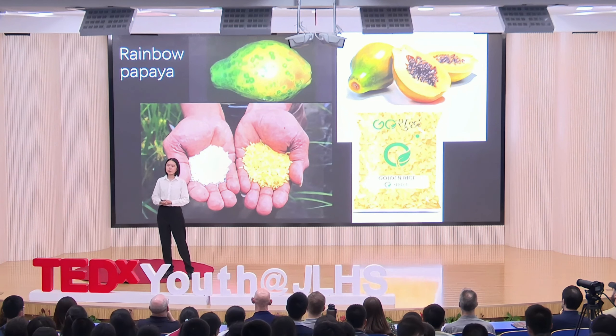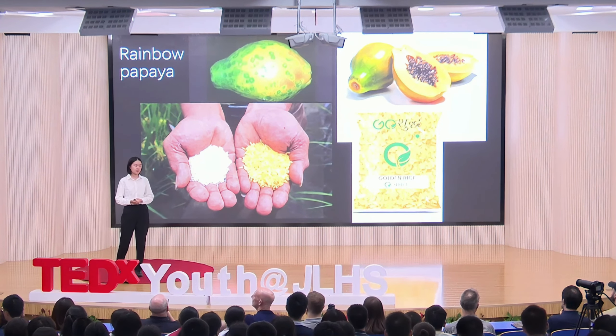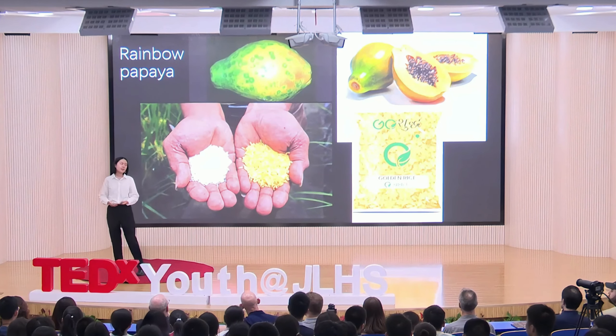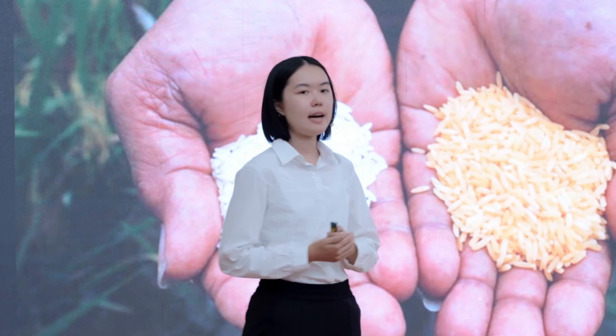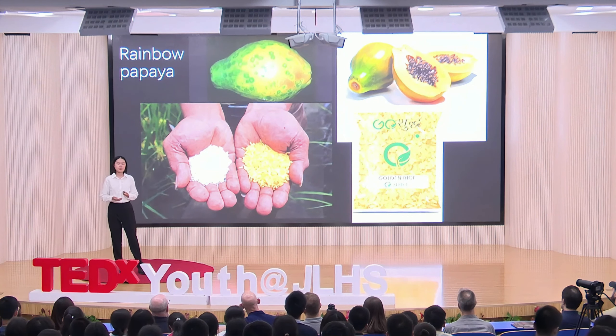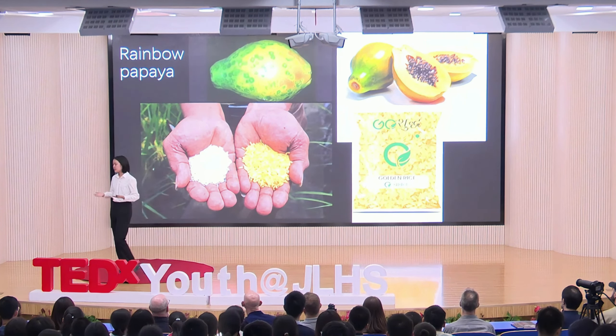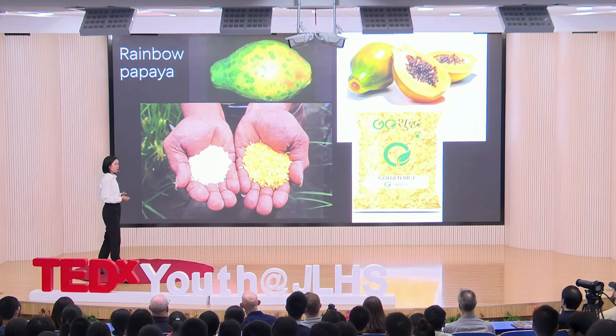From the following example, we can conclude that genetic modification can also practically improve people's lives. The Golden Rice Project aims to improve vitamin A deficiency in poverty regions. Because people there cannot afford vitamin A-rich foods such as vegetables, they desperately need a more affordable alternative. The Golden Rice Project provides them with this alternative. The golden color is due to a special component added during the modification procedure to help people consume vitamin A, which improves their health condition. So genetically modified food is actually a pretty mature industry, with constant improvement in agricultural species.